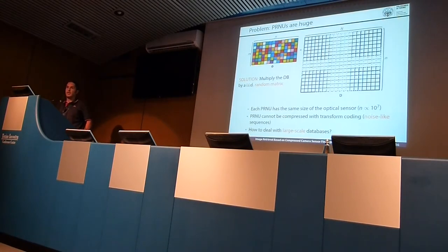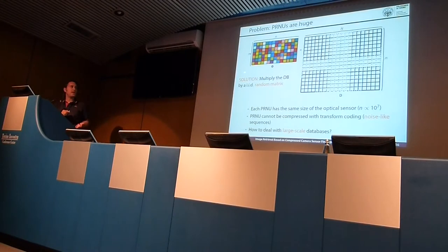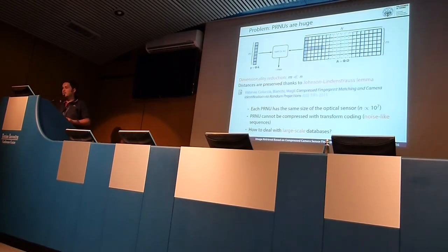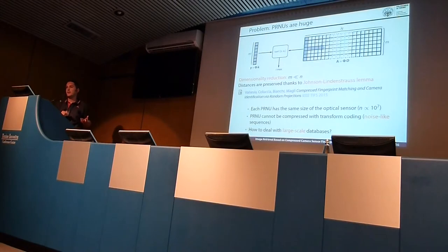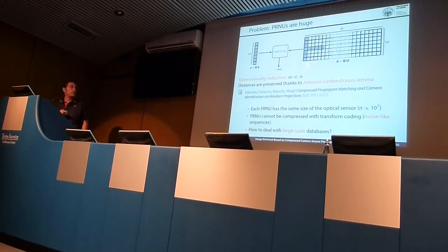A very efficient and effective way to compress PRNU is using random projection. You build a random matrix with far fewer rows than columns, constructed with IID Gaussian random values, then multiply this matrix by each fingerprint to be compressed. The result is a compressive fingerprint with only M entries, where M is much less than N — achieving huge compression. This works because, thanks to the Johnson-Lindenstrauss lemma, the random projection matrix preserves correlations between original and compressive fingerprints. If it preserves correlation, it preserves distances — so searching in the compressed space gives the same results as searching in the original space. Theoretical details about performance degradation as a function of M are published in IEEE Transactions on Information Forensics.